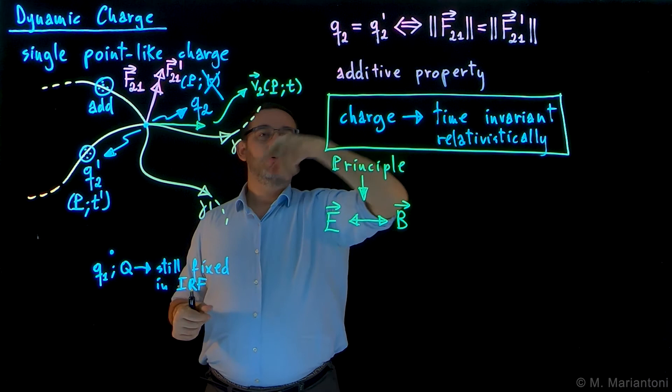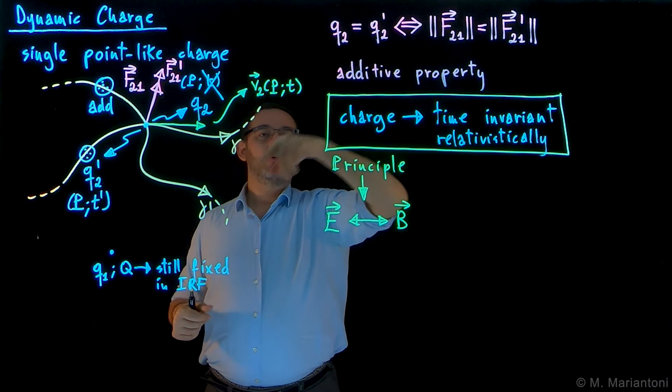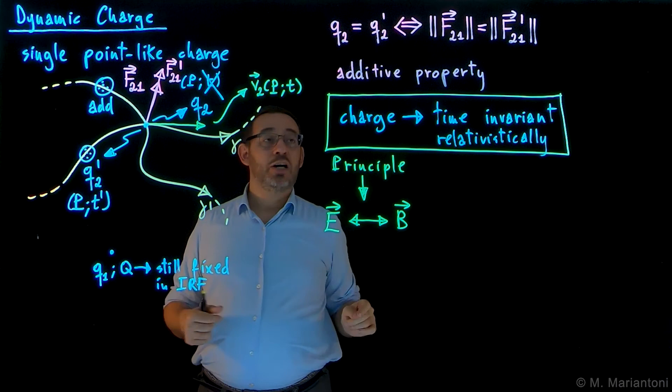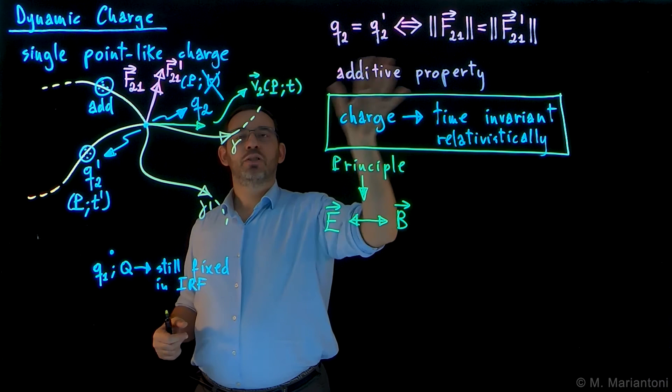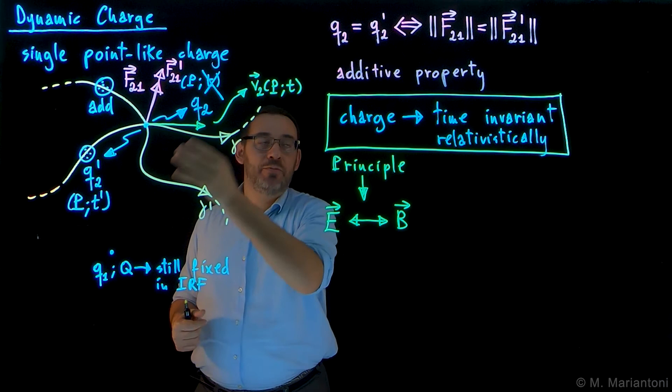If I measure the same force when the charges are moving, the charges are equal. This also applies if I sum up charges together, if I add charges - the additive property is still there. And it doesn't matter if I do this experiment at a certain time or another time, in statics or dynamics, at different times - the charge is still the same. So the charge is relativistic time invariant, which is important to show that E and B, this magnetic field to be introduced in the next video, are actually the same phenomena.